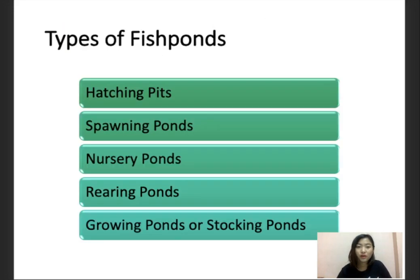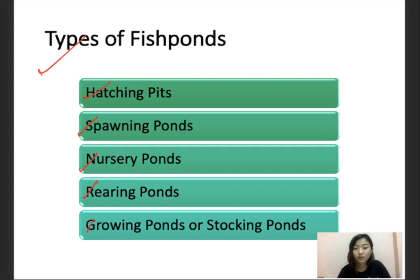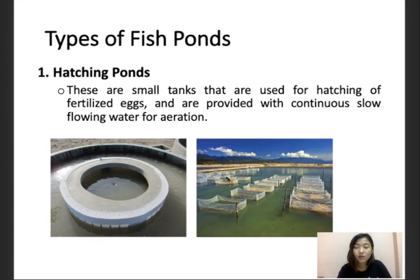Let's look at the types of fish ponds. There are 5 types of fish ponds: the first one is hatching pits, the second is spawning ponds, the third is nursery ponds, the fourth is rearing ponds, and the fifth is growing ponds, also known as stocking ponds. Let's go in detail with each of these types.